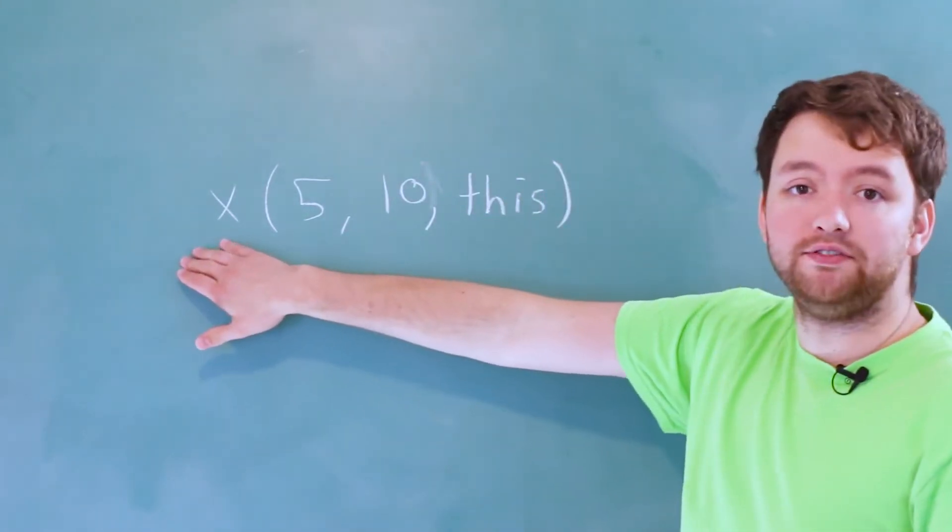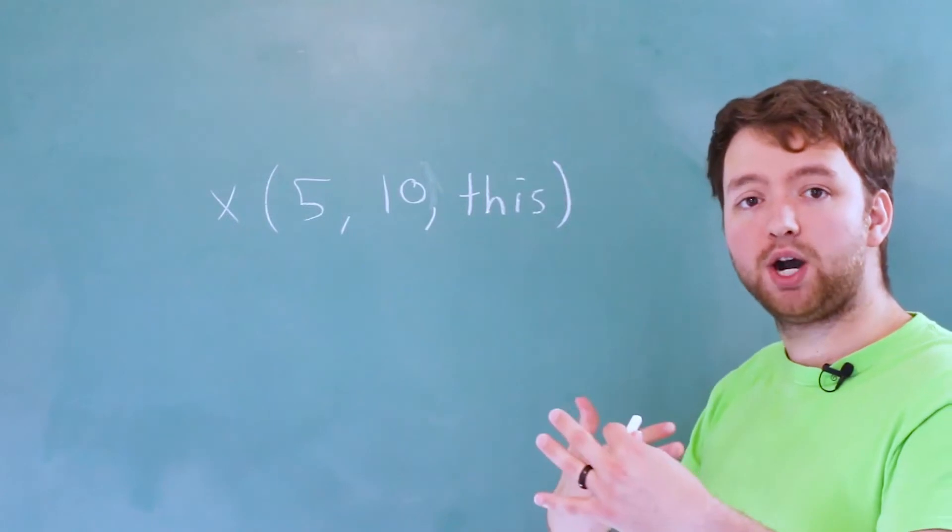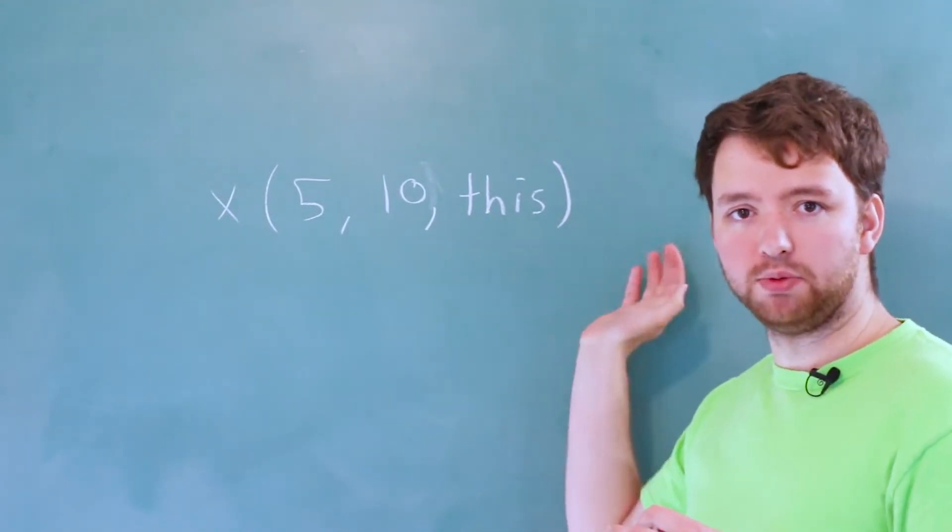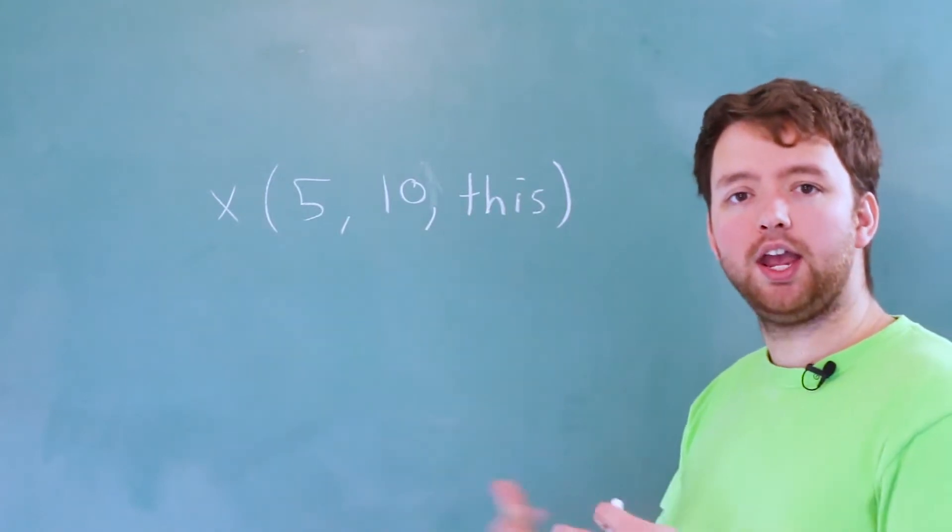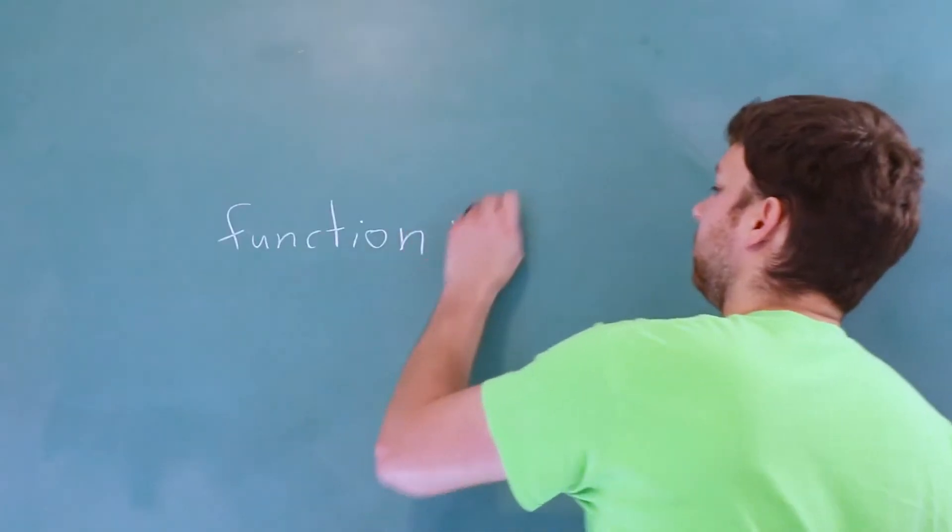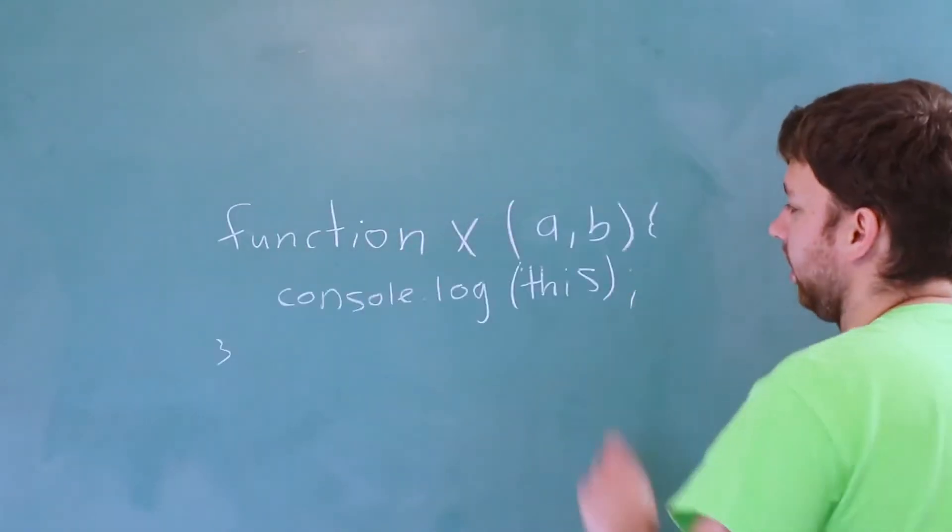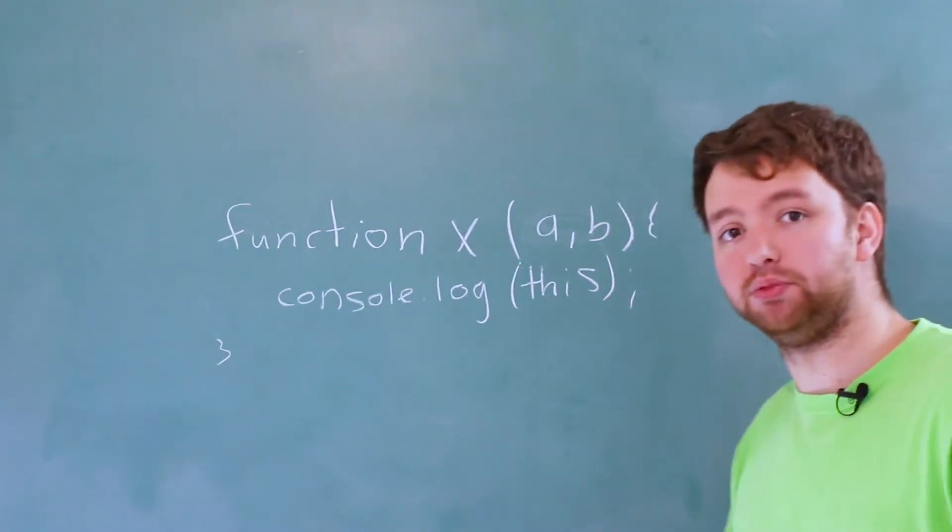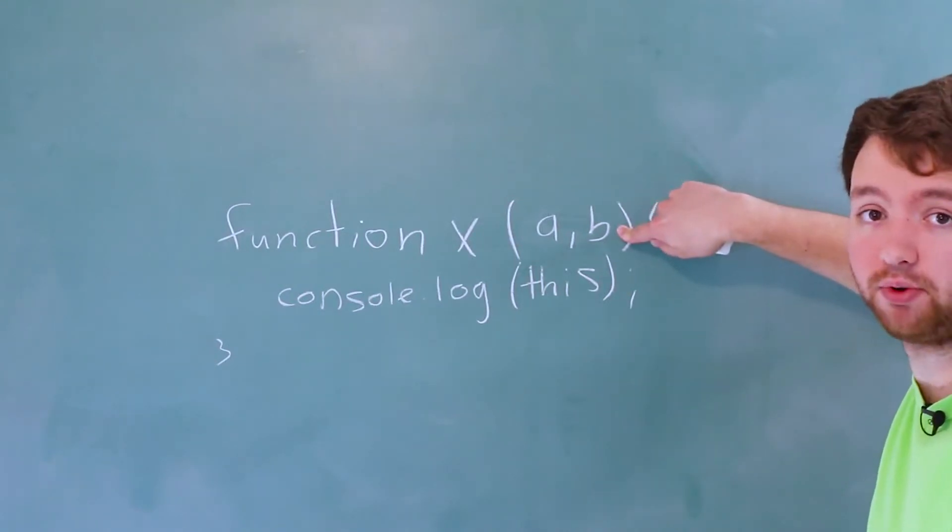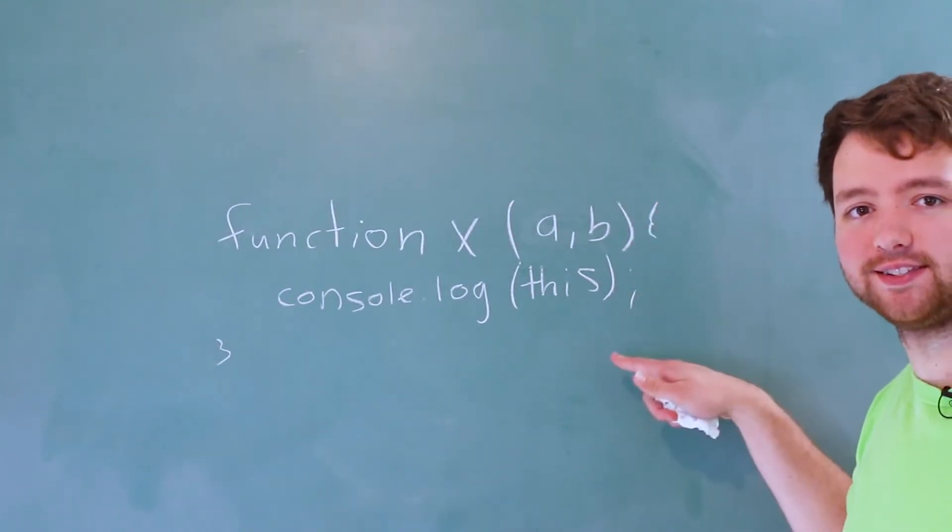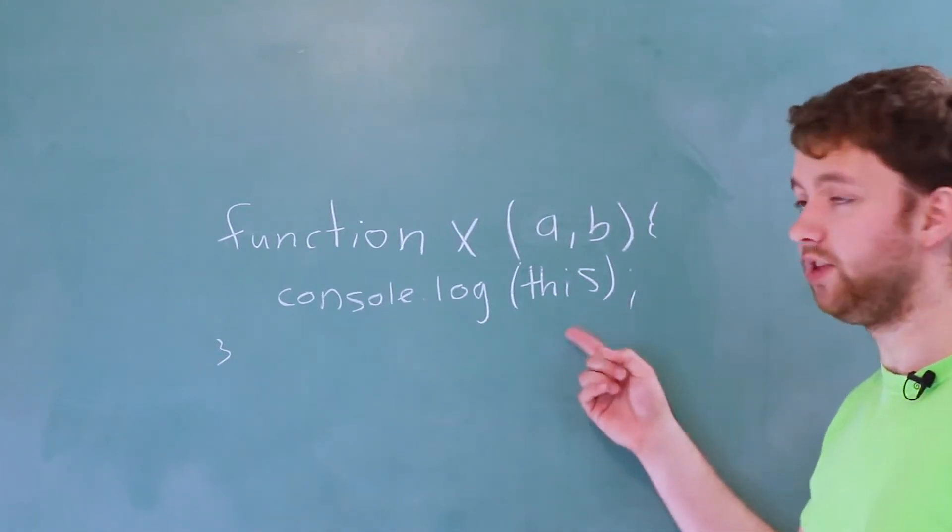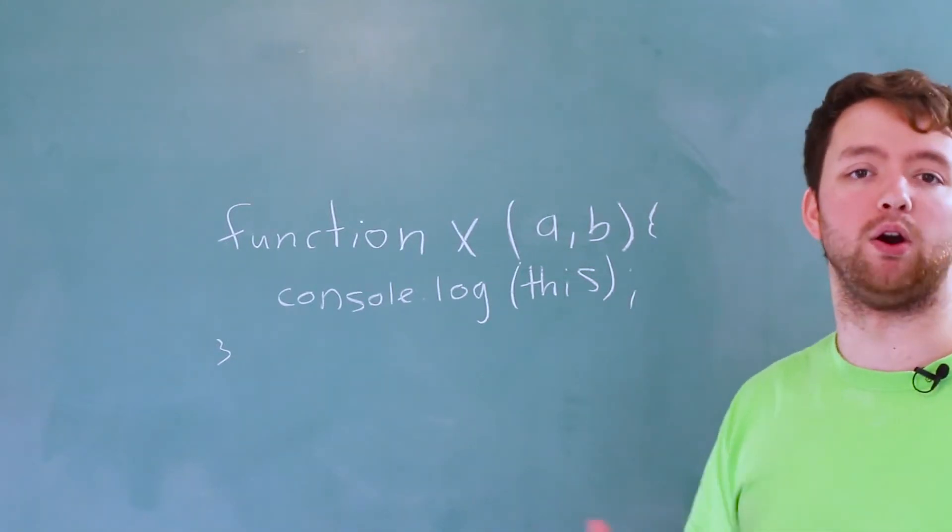So that means inside of the function X in the function body, you can access this variable this that happens to be passed in implicitly and we can do stuff with it. So here we have this function and what we can do is we can console log this, which is the thing that was passed in implicitly. Even though it's not defined in this parameter list, it still exists. It's a thing. Throughout the rest of the series, we're going to use the keyword this to do all kinds of various powerful things.